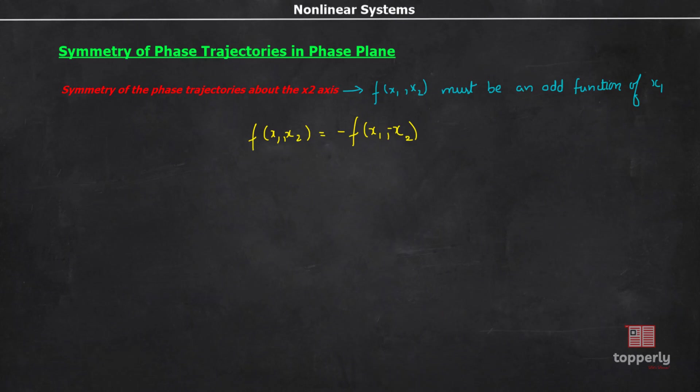And, for the phase trajectories to be symmetric about both the axes, it should be symmetric about the x1 axis and x2 axis individually. And, the condition for that is, f of x1 comma x2 should be equal to minus of f of minus x1 comma minus x2.